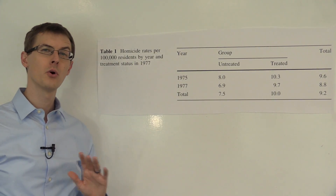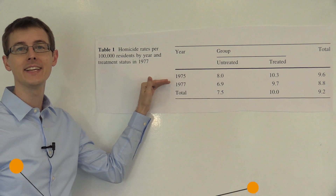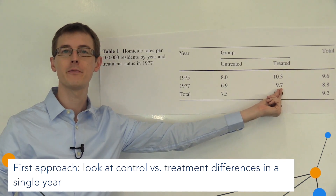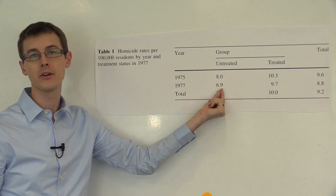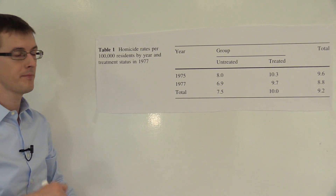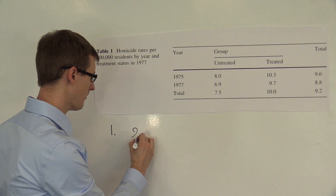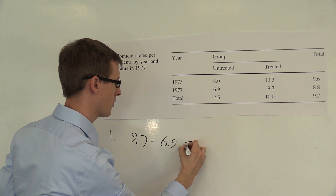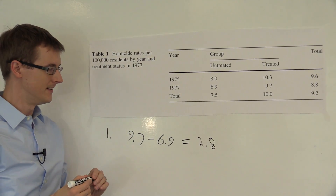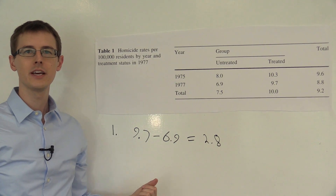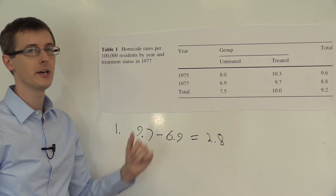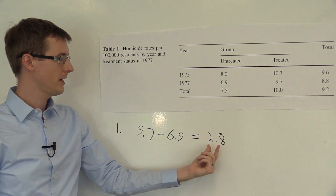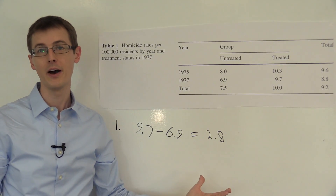Now there are three different kinds of analysis we can do to use this data to learn about the causal effect of the death penalty. The first approach is to ignore the fact that we have panel data and just look at the 1977 data and do a contemporaneous comparison — just compare the homicide rate for the treated group, the states that have the death penalty, with the homicide rate for the states that don't. If we do that, we get the homicide rate for the treatment group minus the homicide rate for the control group, and that's going to be positive 2.8. This suggests that the death penalty actually increases homicides. The difference is an estimate of the average treatment effect of the death penalty.